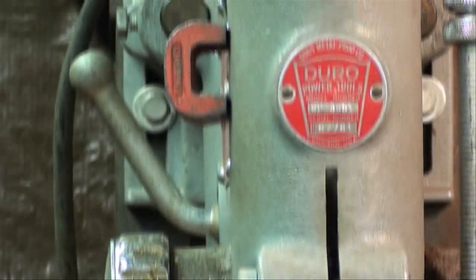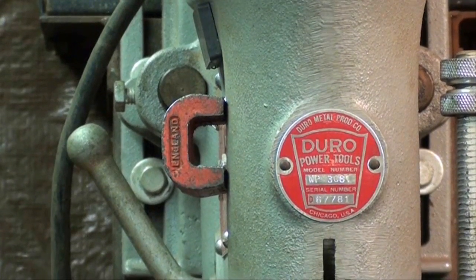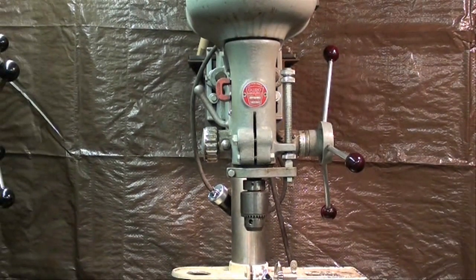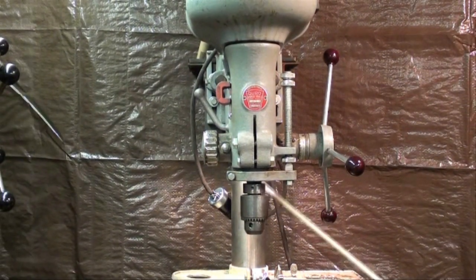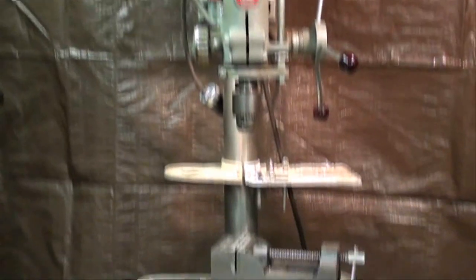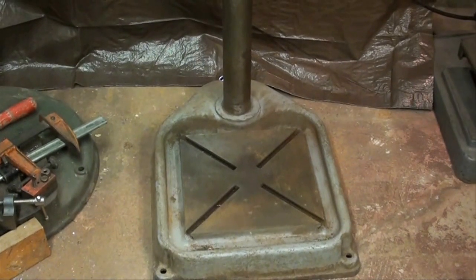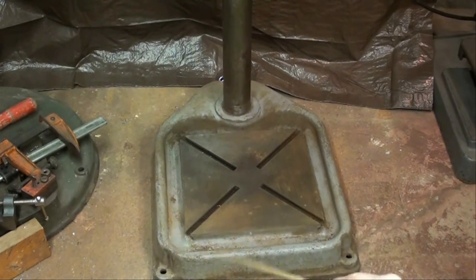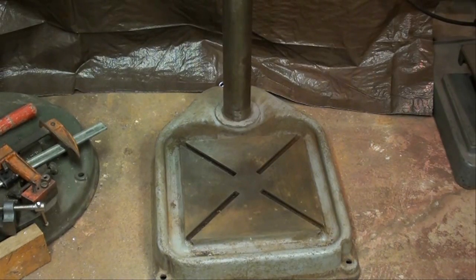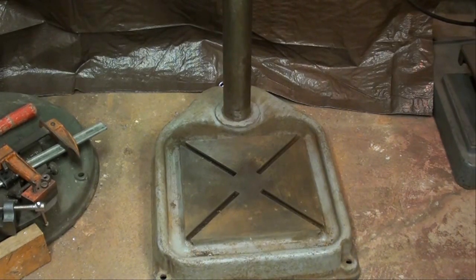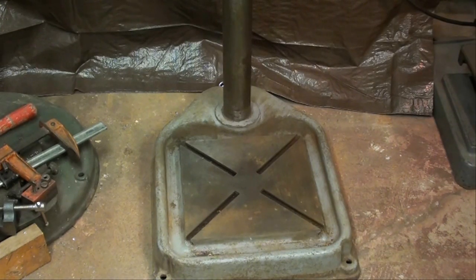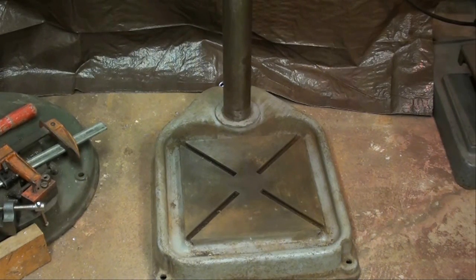It's a Duro. I've heard of their table saws and woodworking machinery, but I didn't know that they made drill presses. It's a pretty nice machine with a half inch chuck. There's a built-in work light right up here into the casting. If you look at the base, heavy cast iron base, it's quite wide.